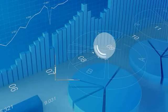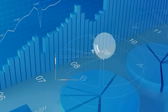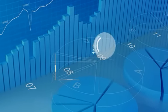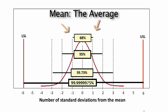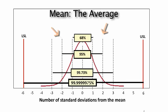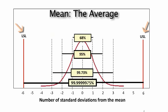Through the empirical rules of statistics, we know that if we have properly sampled the data and the data is normally distributed, 68% of the quarter pounders we measured should fall within plus or minus one standard deviation of the mean. At the same time, 95% of the samples should fall within two standard deviations. When we reach plus or minus six standard deviations — which is Six Sigma — we know that 99.99999975% of all the quarter pounders measured should fall within six standard deviations of the mean.